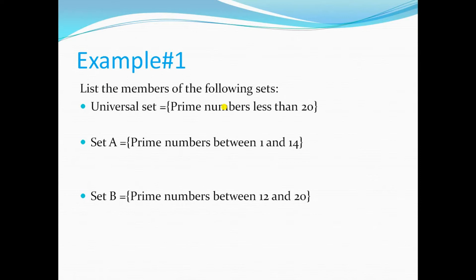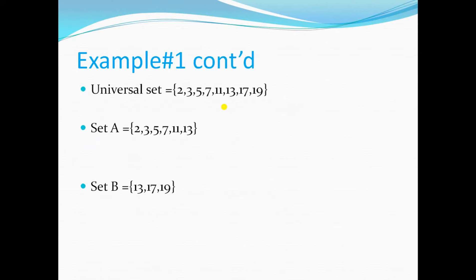Let us do example number one. List the members of the following sets: the universal set is prime numbers less than 20, set A is prime numbers between 1 and 14, and set B is prime numbers between 12 and 20.